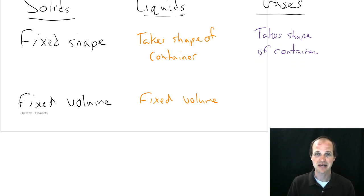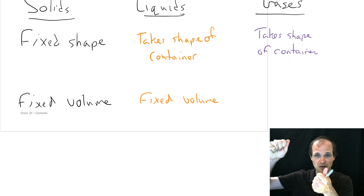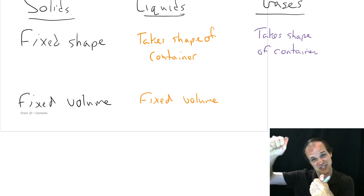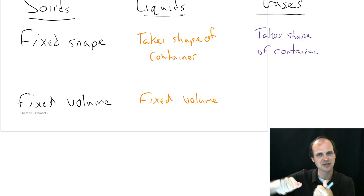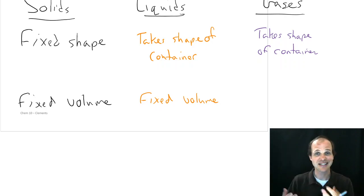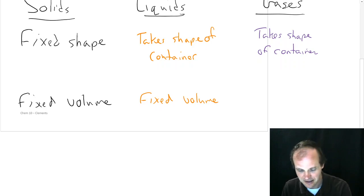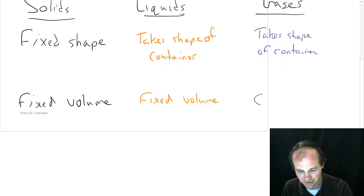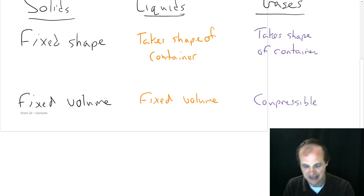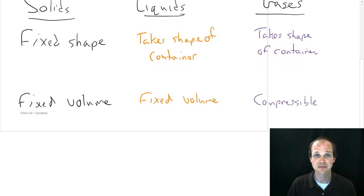But what about a gas? Think about a bike pump. If you put your finger over the end and push down, you can push the handle — it's the same amount of gas in there because you plugged it. So we have something that has a volume that can change. We're going to call this compressible. A gas is compressible.